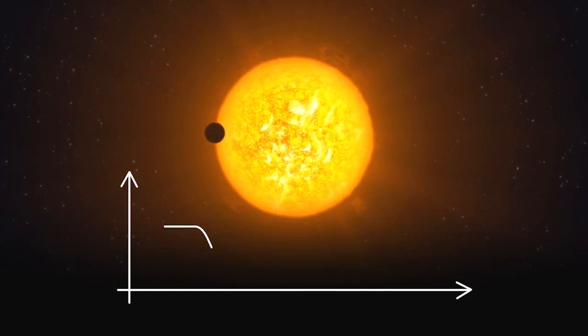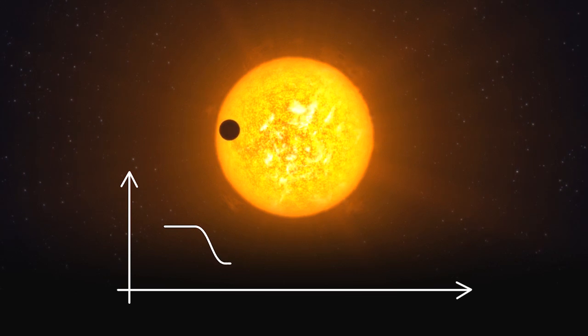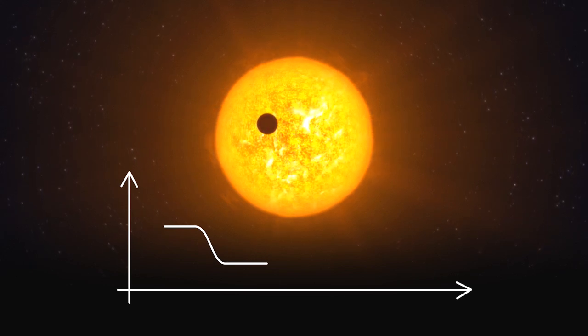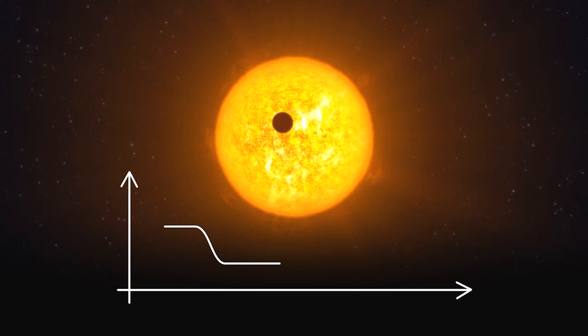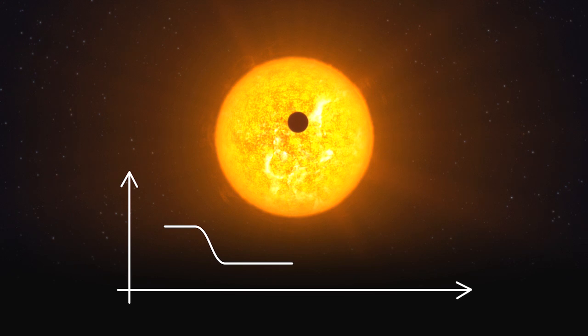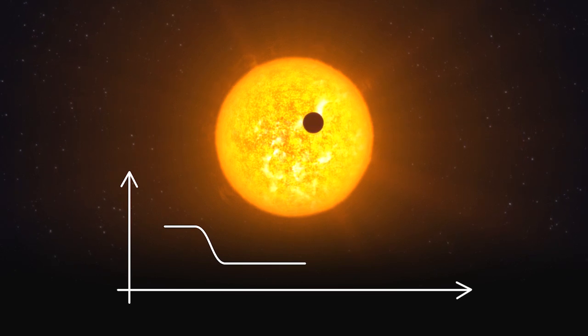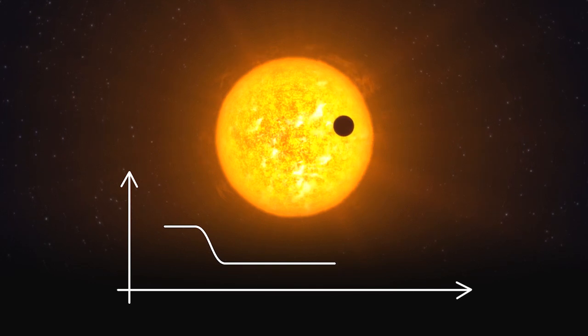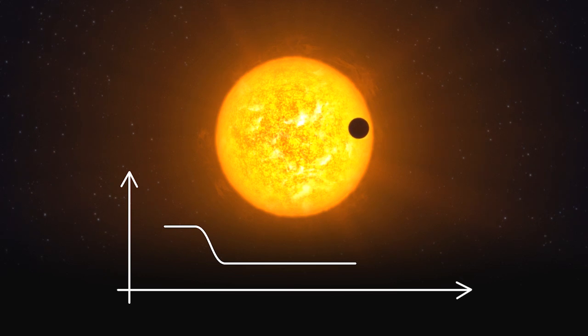Today, many exoplanets are discovered when they transit across their parent stars. If we happen to see the planet's orbit edge-on, it will pass in front of its star every cycle. Thus, tiny, regular brightness dips in the light of a star betray the existence of an orbiting planet.